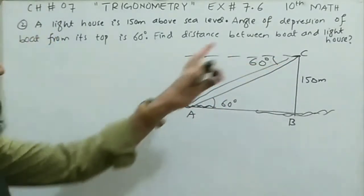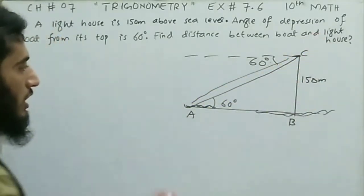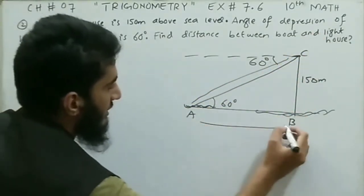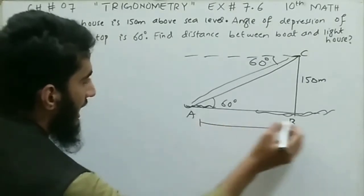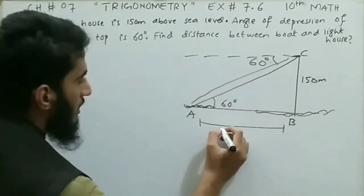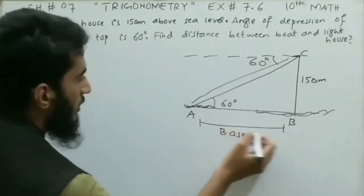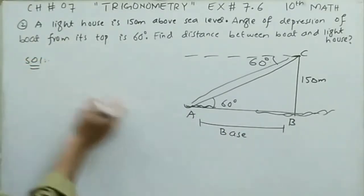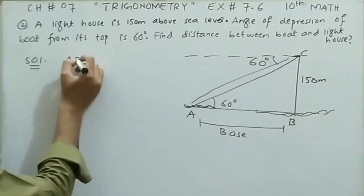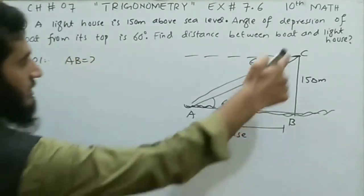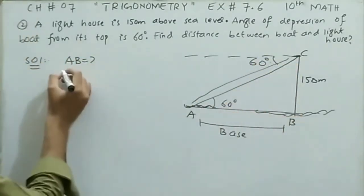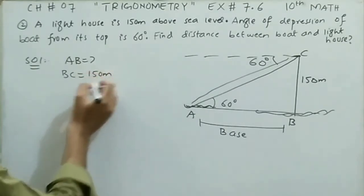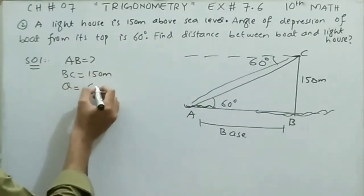They tell us to find the distance between the boat and the lighthouse. This is the boat and this is the lighthouse — find this distance between the two objects. Moving to the solution: we are going to find the magnitude of AB. BC is 150 meters and the angle theta is 60 degrees.